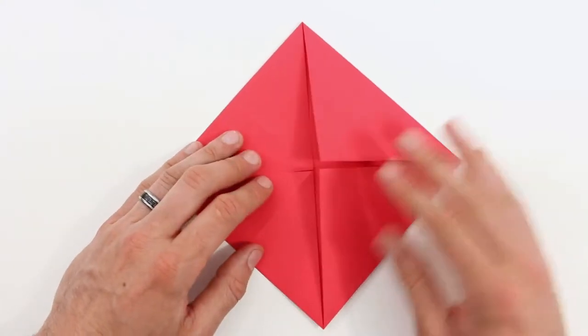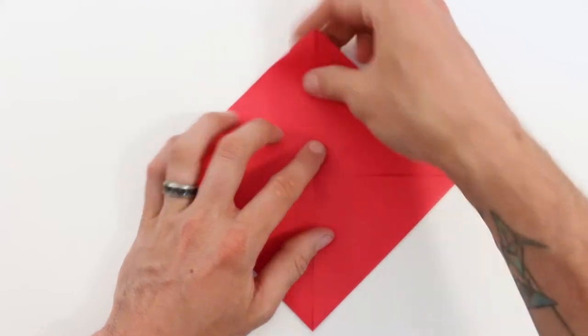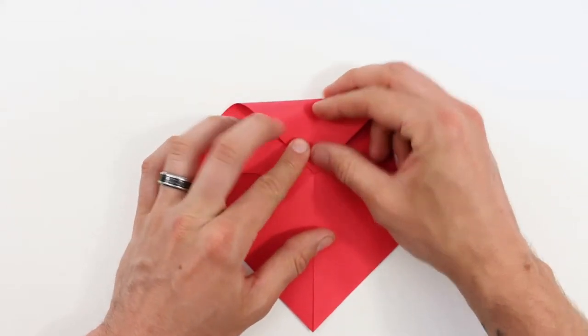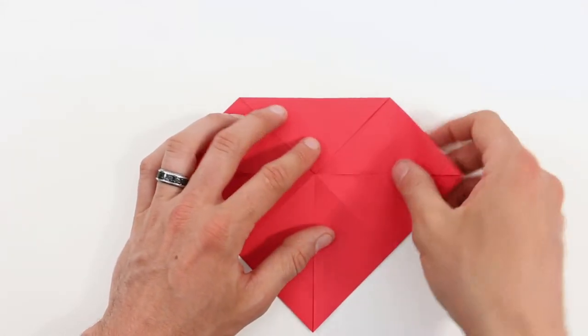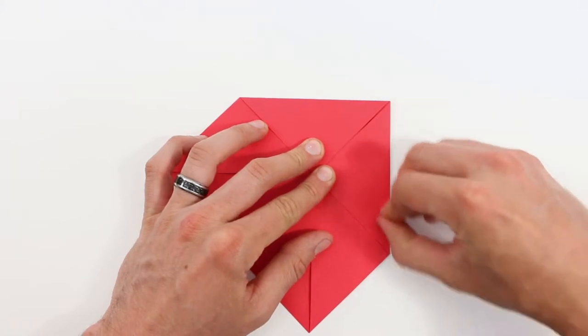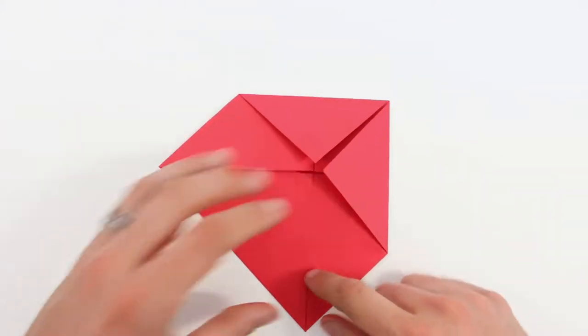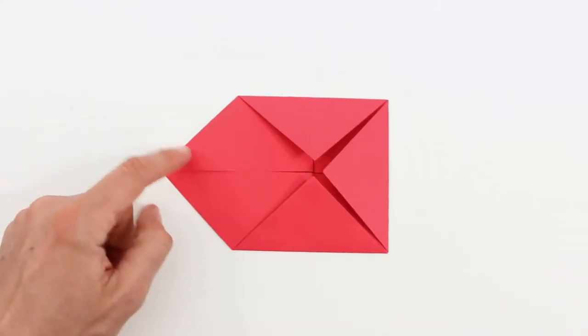Next we're going to make another blintz fold. So we'll bring each of these four corners into the center of that X. So we'll start on the top, and the right, and the bottom, and the left.